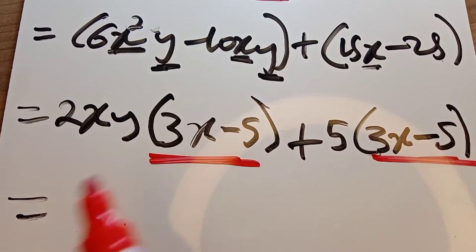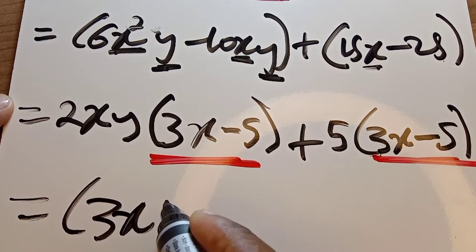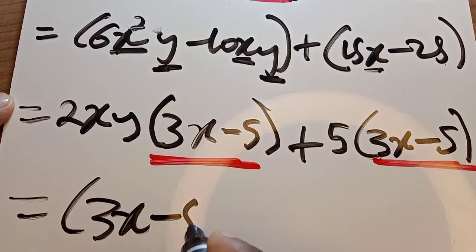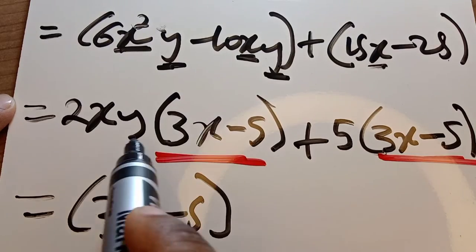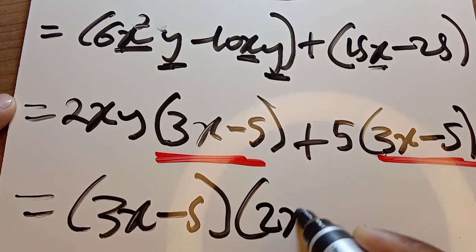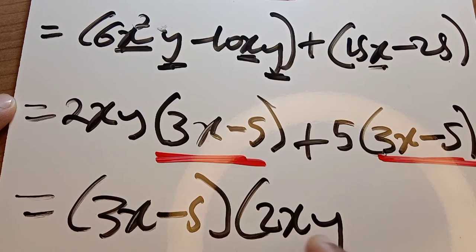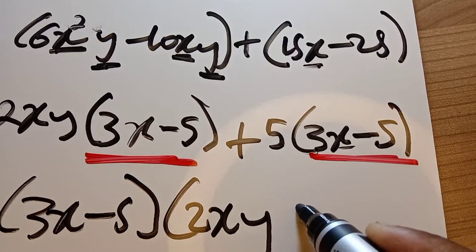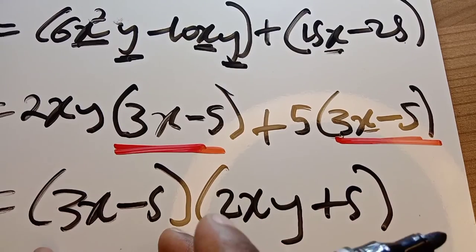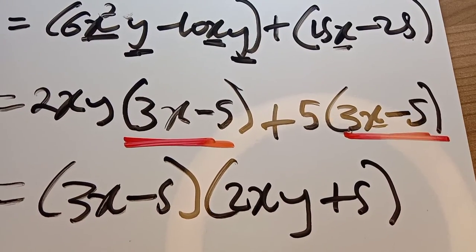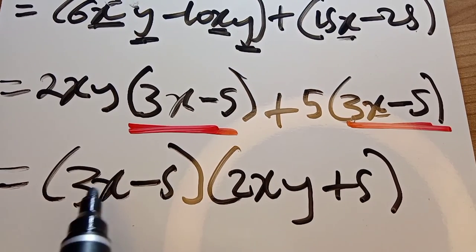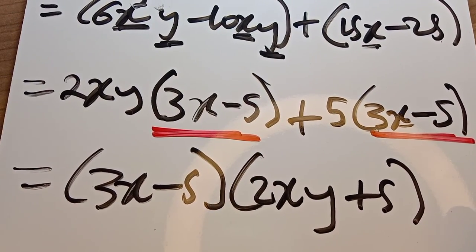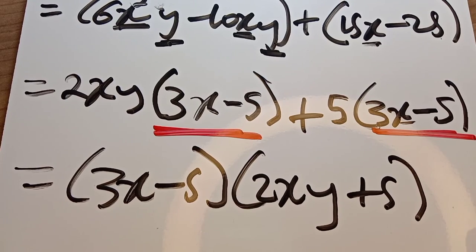The common bracket appears in both terms, so we take the whole bracket as a common factor. When we take it out, we remain with 2xy from the first group and positive 5 from the second group. So the bracket multiplied by 2xy gives 2xy times that bracket, and the bracket multiplied by 5 gives 5 times that bracket. There is no further common factor, so we have fully factorized 1.1.2. We are done with 1.1.